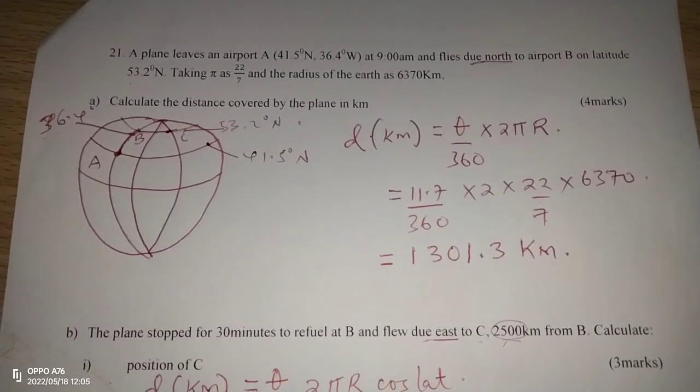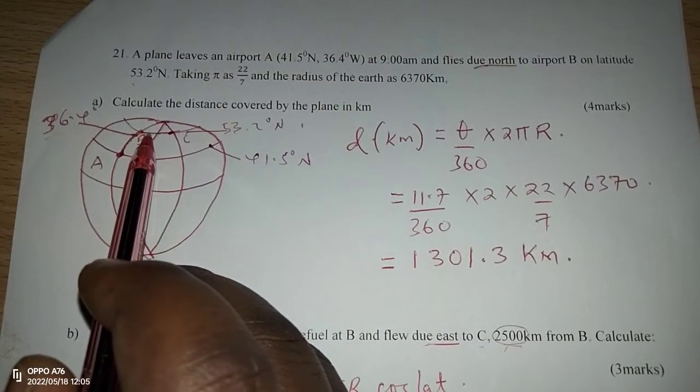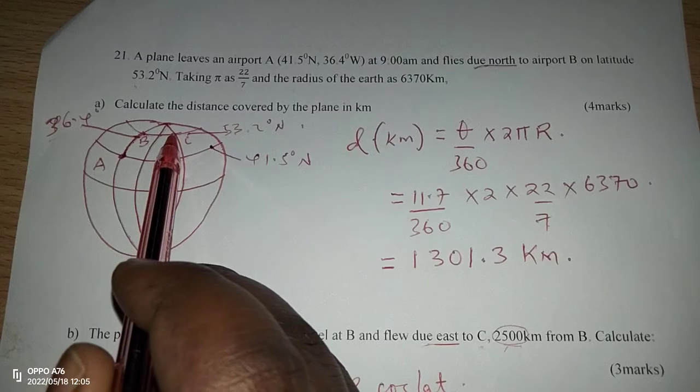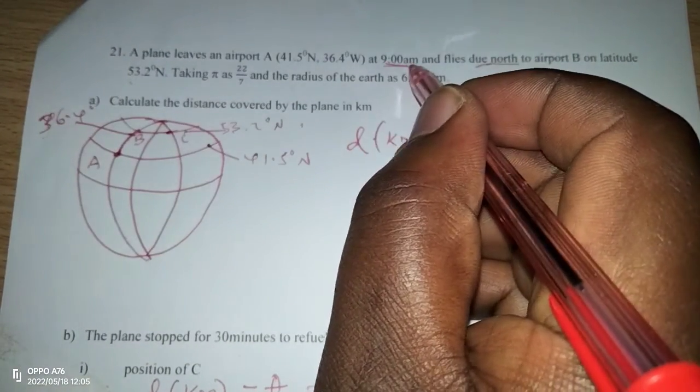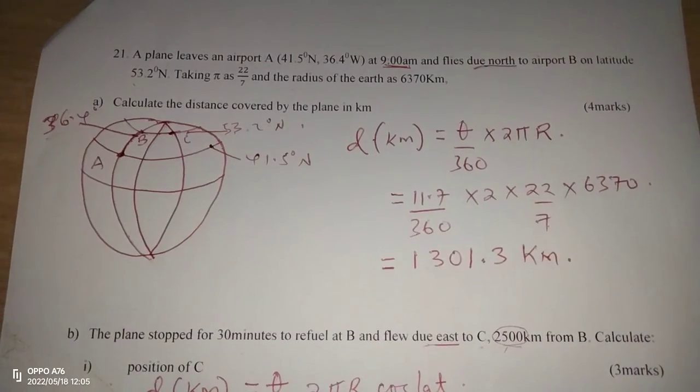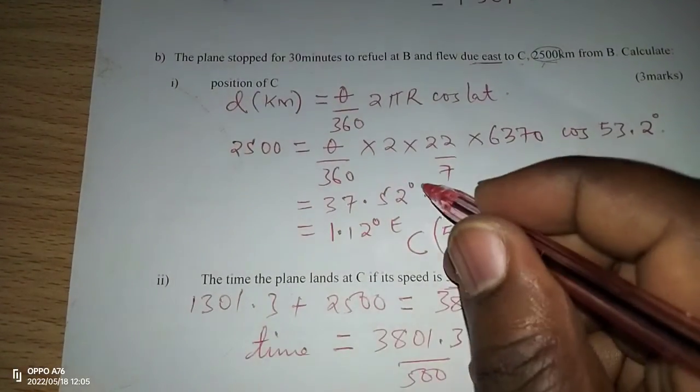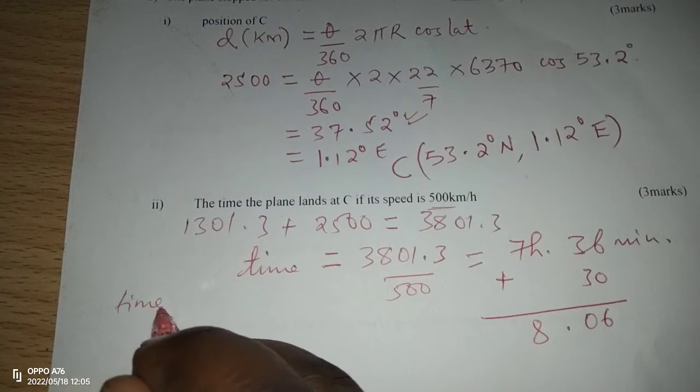Something else to master is that there is what we call time difference in longitudes. From one longitude to the other, we have a difference of 4 minutes. Which means the time at C is ahead of the time at B and the time at A. Therefore, when it was 9 a.m., the starting time of this plane, the time at C was not 9 a.m. C was ahead in time. And the time C was ahead is, we have the angle difference already as 37.2. Therefore, we are going to get the time difference.